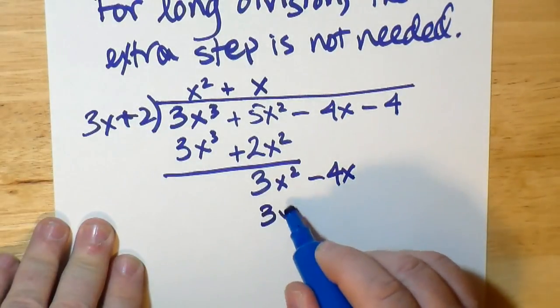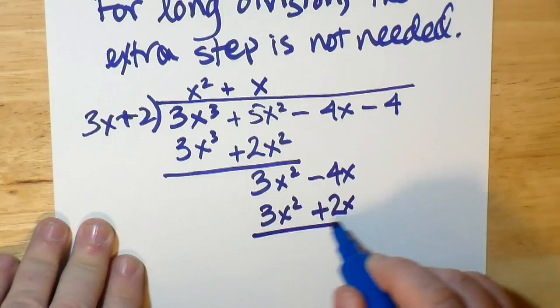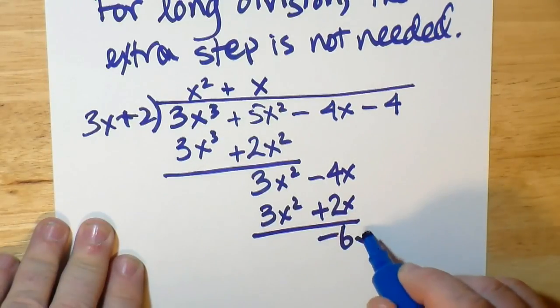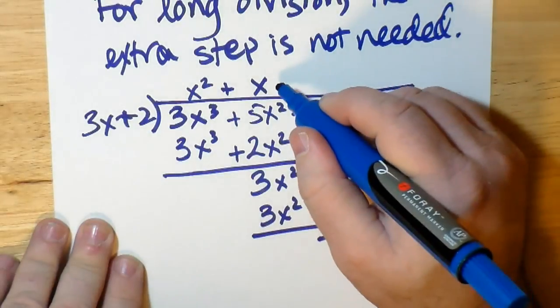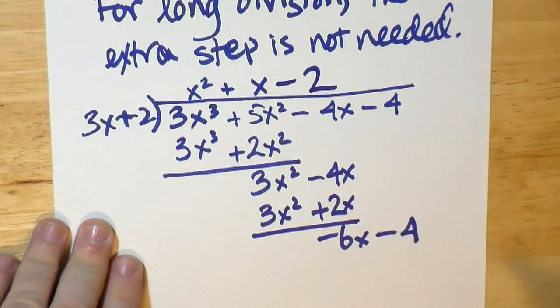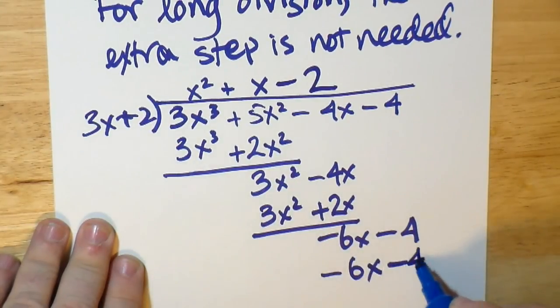x times 3x gives us 3x² plus 2x. Negative 4x minus 2x is negative 6x. We bring down the negative 4. Now we can multiply that whole thing by minus 2, and we can see that everything goes in evenly.